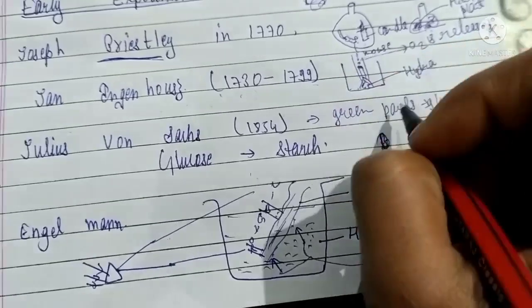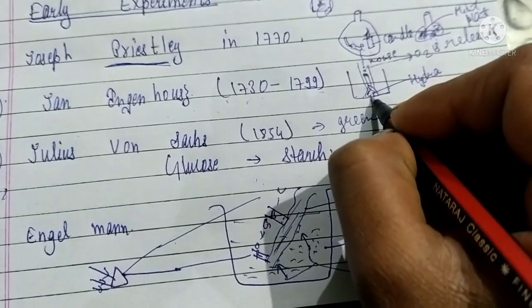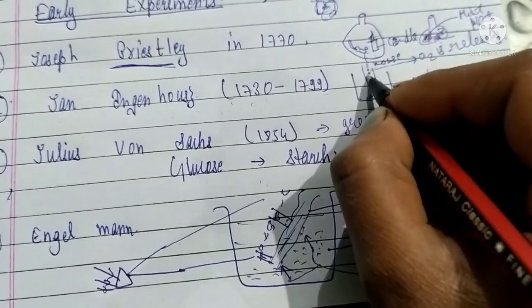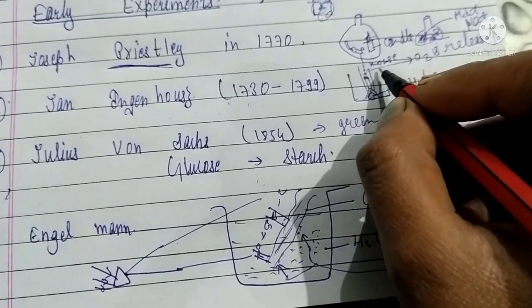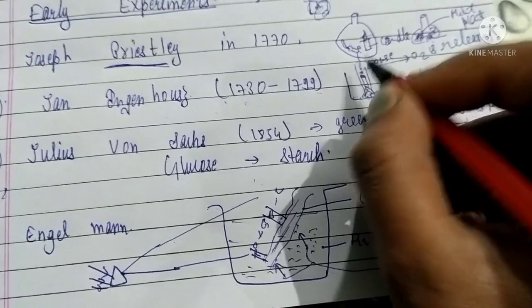These bubbles were coming from the hydra plant because when hydra does photosynthesis, oxygen gas is released. So this was hydra. Now you might ask, how do we know that these bubbles are oxygen gas?